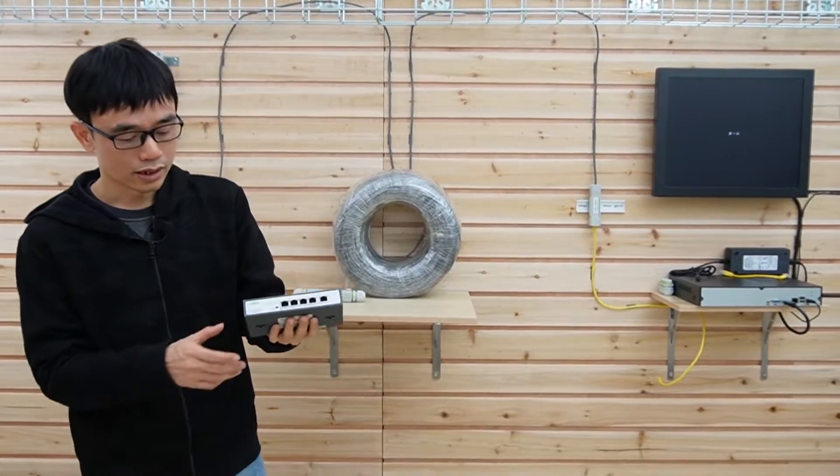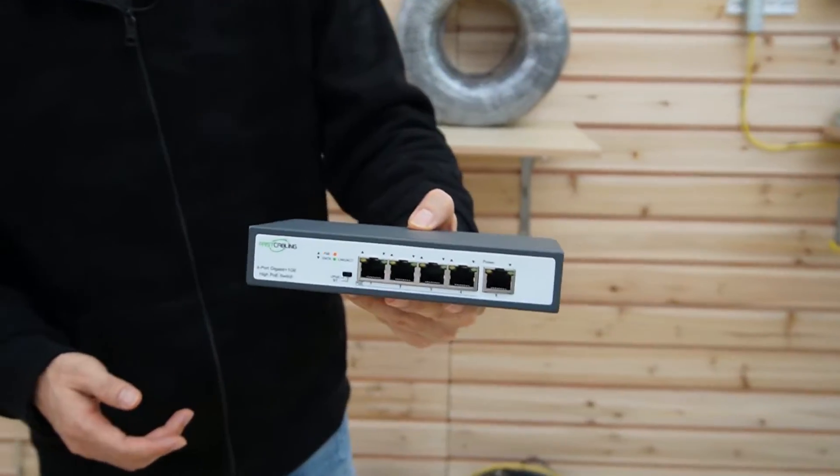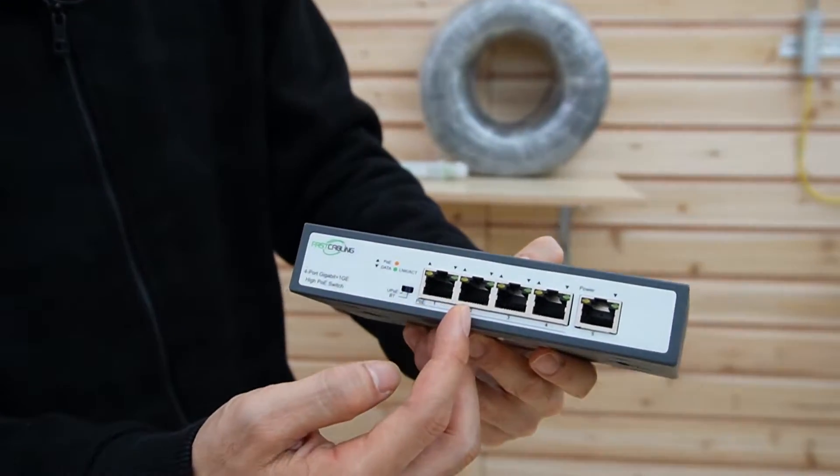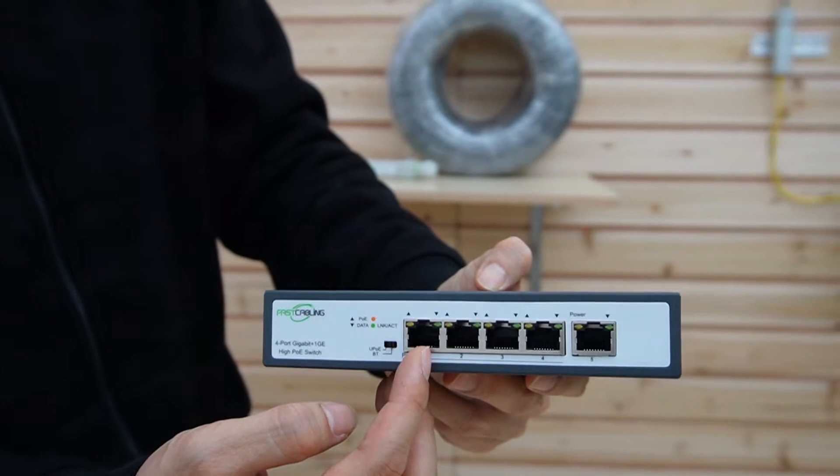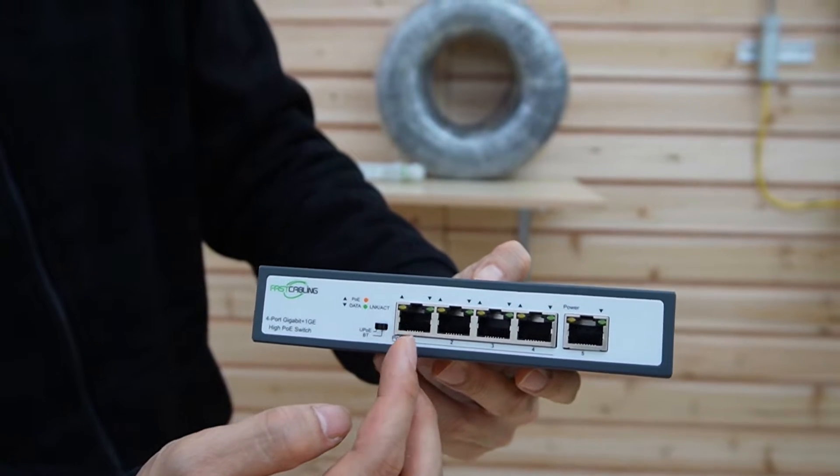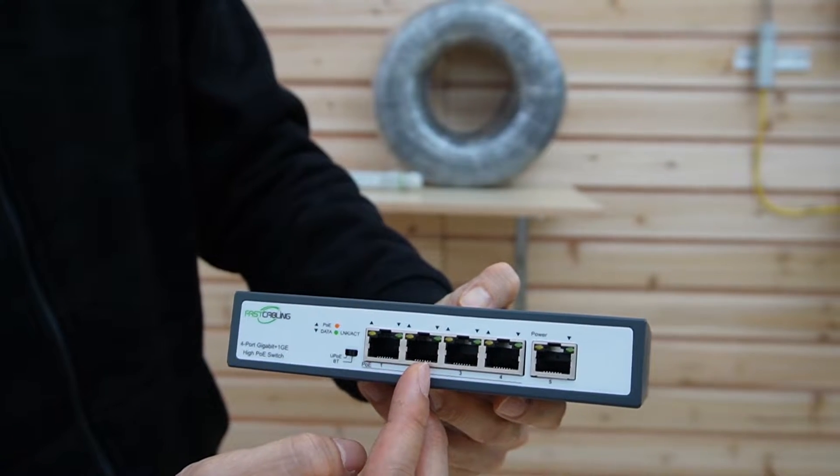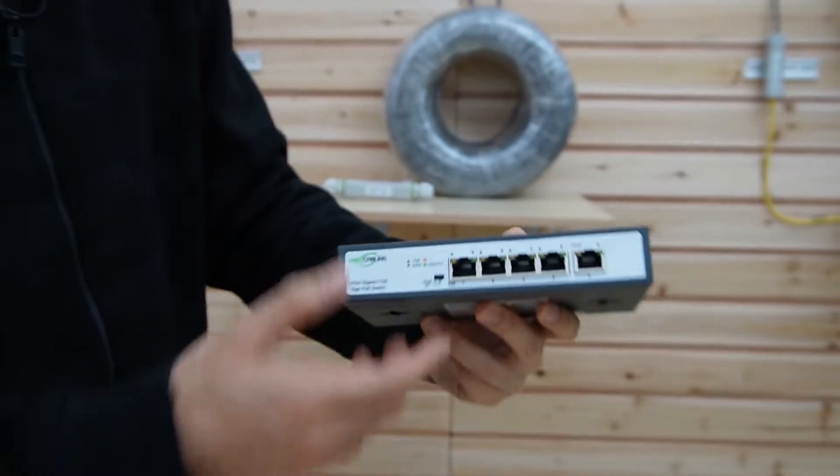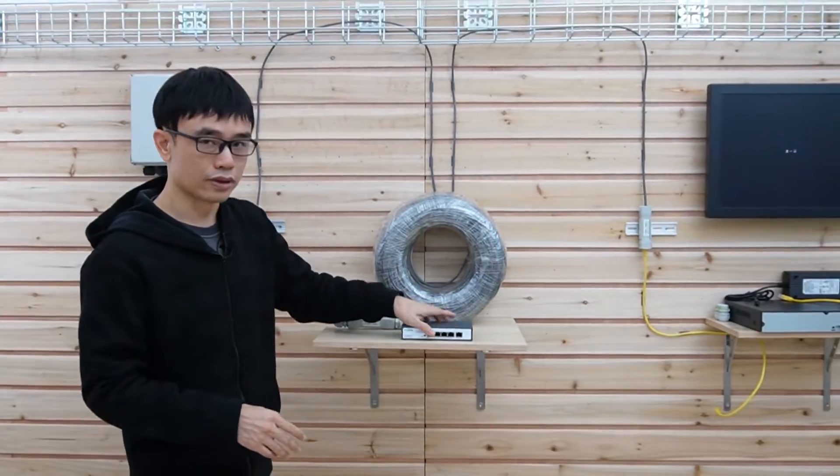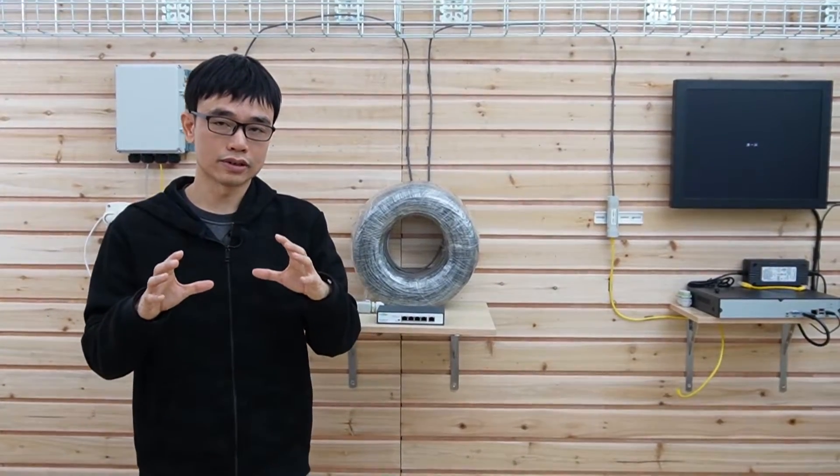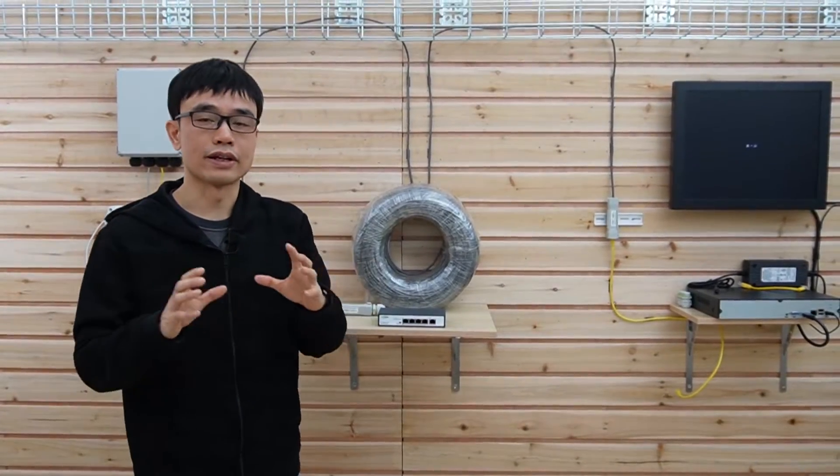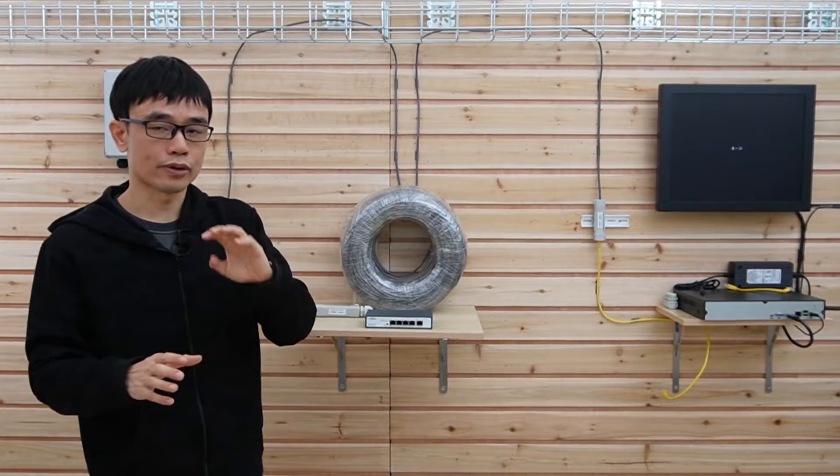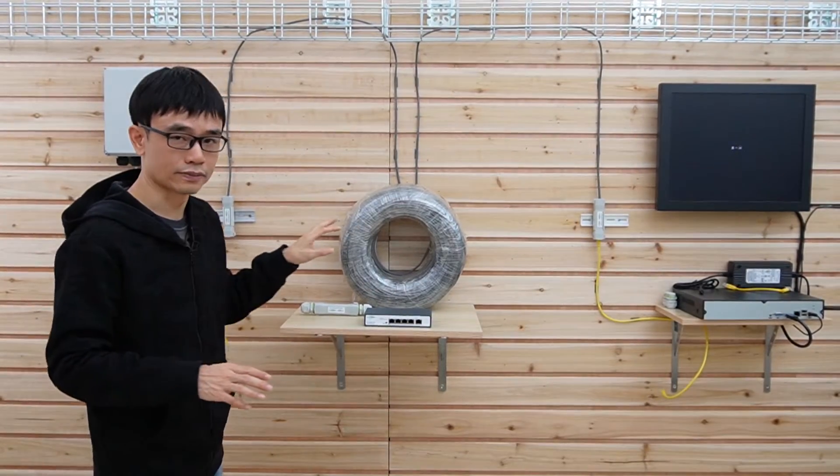So in this case, I am using this 90-watt PoE injector. This PoE injector can output 90 watts through a single Ethernet port from port 1 and port 2. So we can use port 1 for the left side and port 2 for the right side. With the 90-watt output from the single Ethernet port, then we will have enough power to power four cameras after 1,000 feet long run.